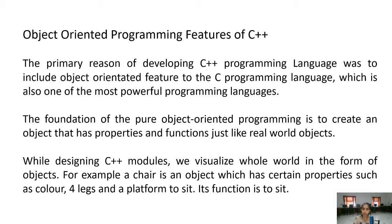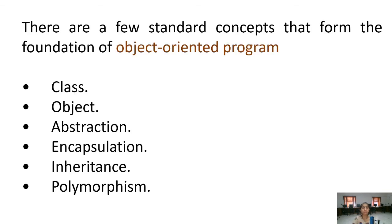The foundation of pure object oriented programming is to create an object that has properties and functions just like the real world. Real life objects like car, tables, and even students are objects. You people have different roll numbers, names, addresses, and then you have to deposit your fine and fees. These fees and fines are the functions that can be performed on your data — your results and marks. While designing C++ modules, we visualize the whole program in the form of objects. For example, a chair is an object which has certain properties such as color, four legs and a platform to sit. Its function is to sit.